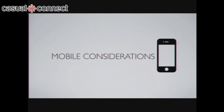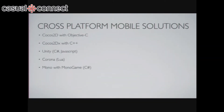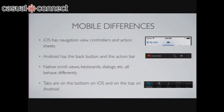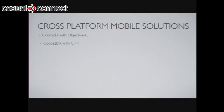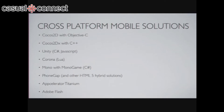So mobile considerations — there are a lot of cross-platform mobile solutions out there. Everything from Cocos2D with Objective-C, Cocos2DX with C++ — both of those you can use my company to get to Android. Unity, where you can use C# and JavaScript — they're not really native to any of the platforms, but they're high-level enough that it's easy for Unity to port those to new platforms. You've got Corona, Monogame, PhoneGap, Accelerator, Adobe Flash. All these solutions do work, though Adobe Flash is more on the out because it's harder to do with mobile. You really have to evaluate these for their merits, what they'll provide you, and whether you can find the talent for each.